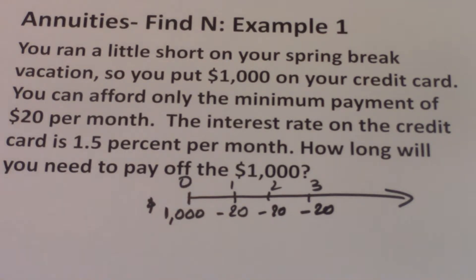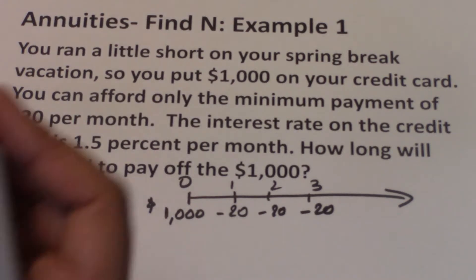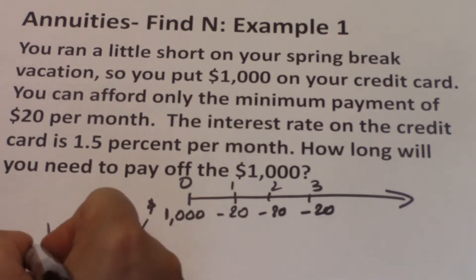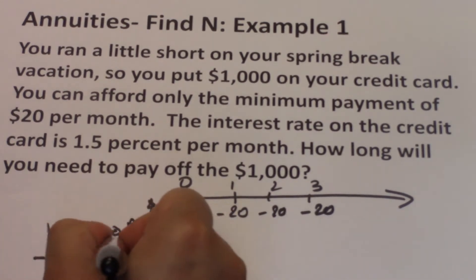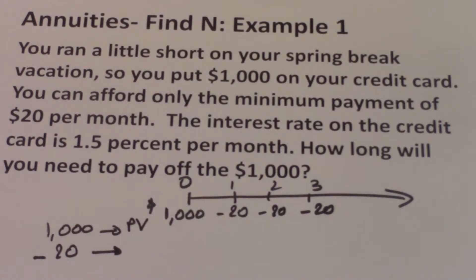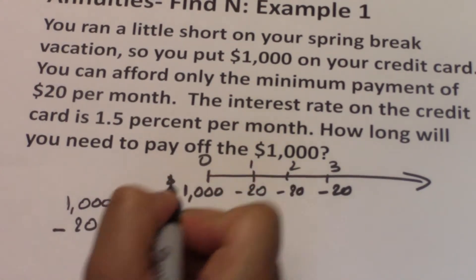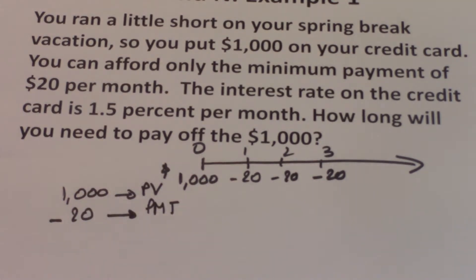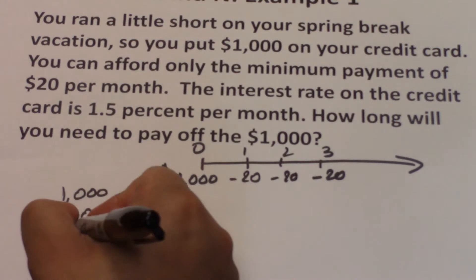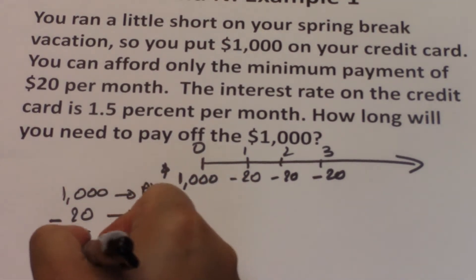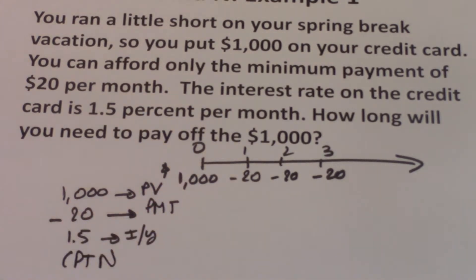Because the $1,000 happens earlier on the timeline, that is a present value. So $1,000 is your PV. That negative $20 is a cash outflow that happens every period, so that would be your PMT. The credit card company charges 1.5% per month, so 1.5% would be your I/Y. And here you're trying to solve for N, so you compute N.